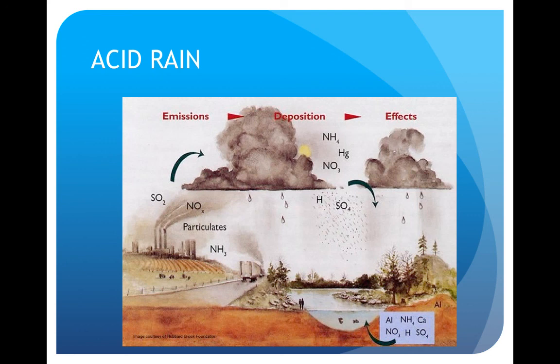Rain with a pH as low as 2 has been recorded in the eastern United States, and fog as low as 1.7, which is lower than your stomach acid, in Los Angeles. Tall smokestacks can cause acid rain to fall thousands of miles away.